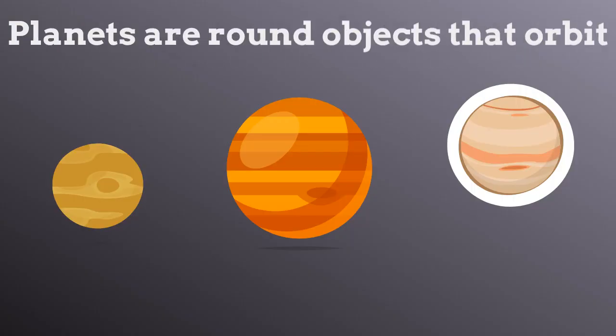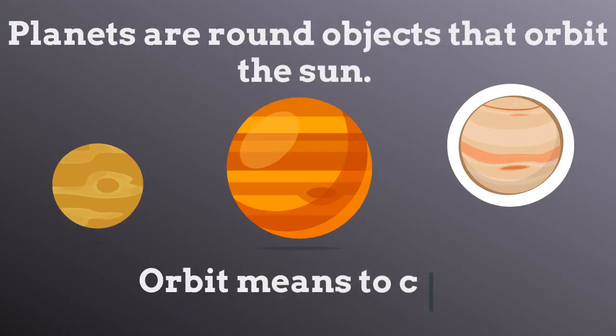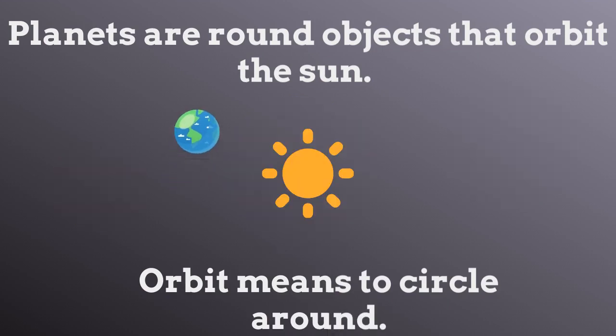Planets are round objects that orbit the sun. And orbit means to circle around. So planets are those round objects which circle around the sun.